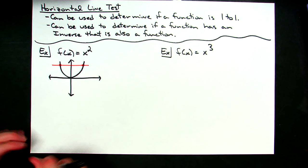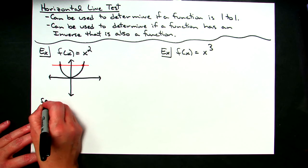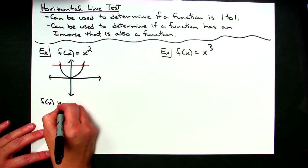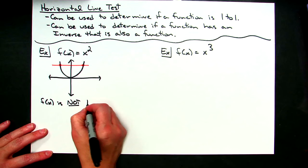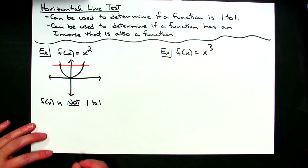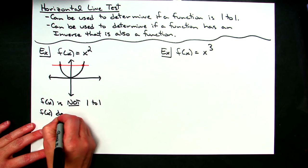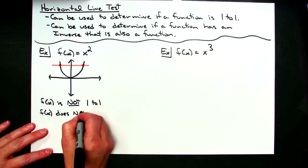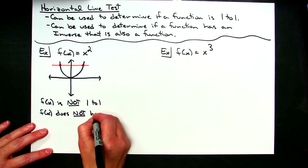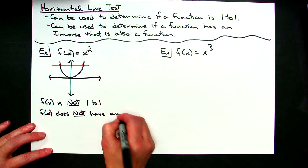So from that, I can conclude that f of x is not one to one. I can also conclude that f of x does not have an inverse function.